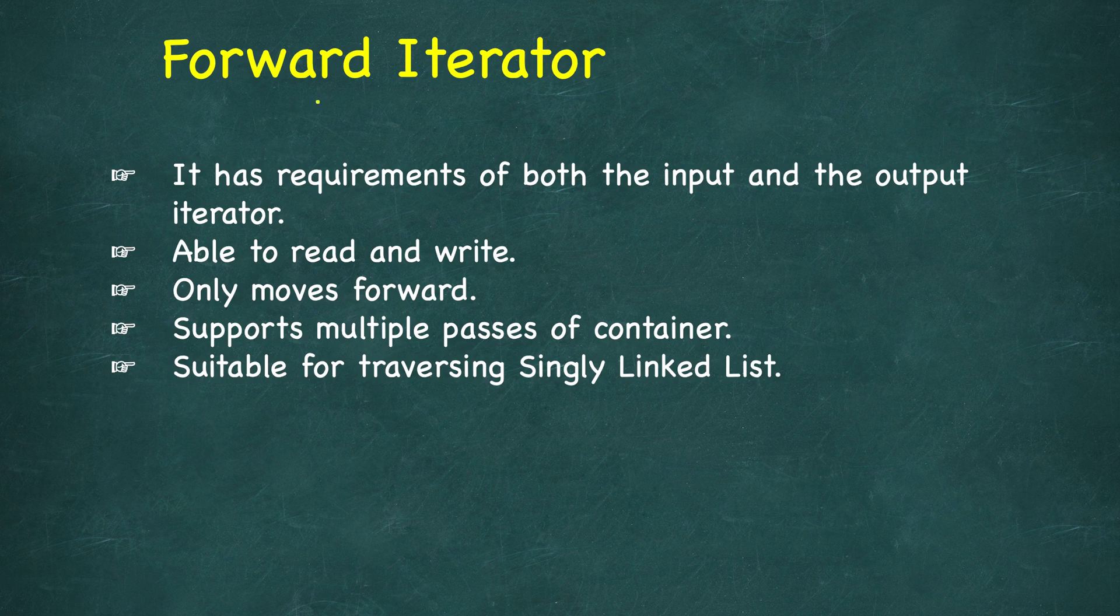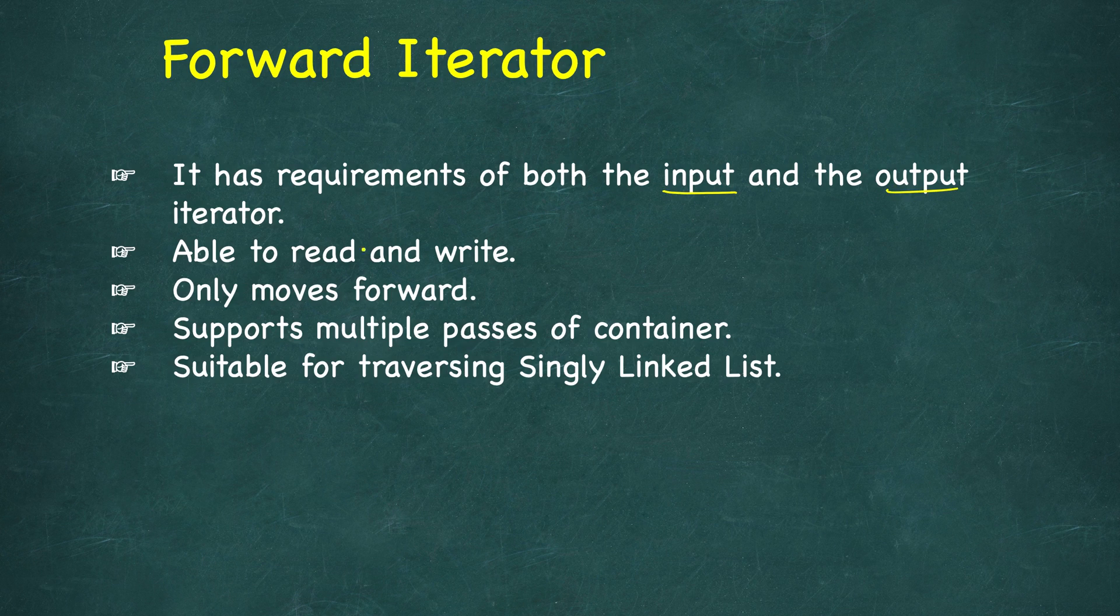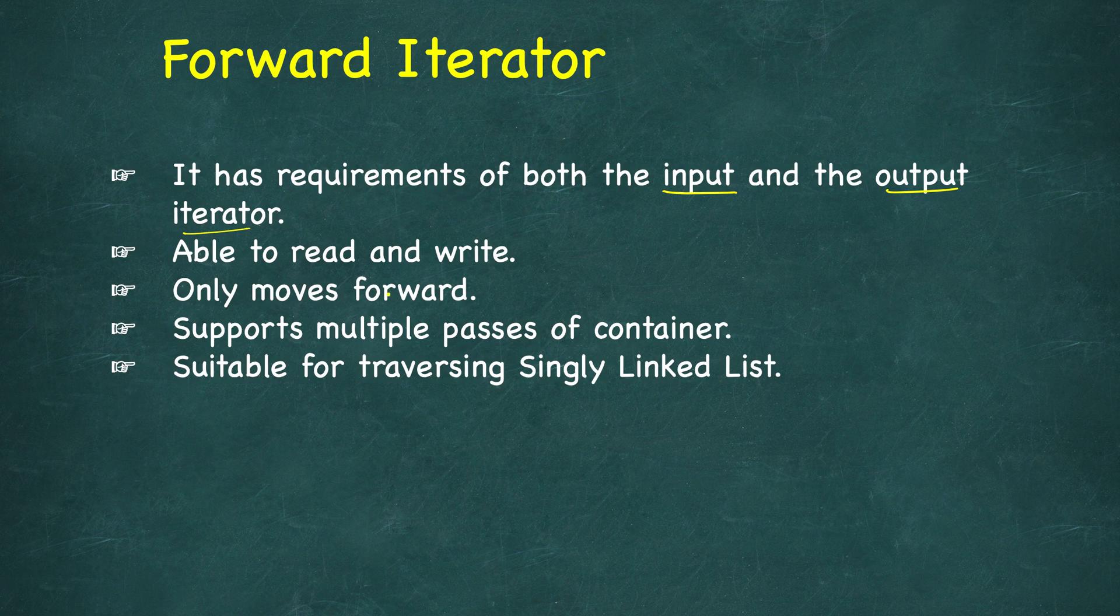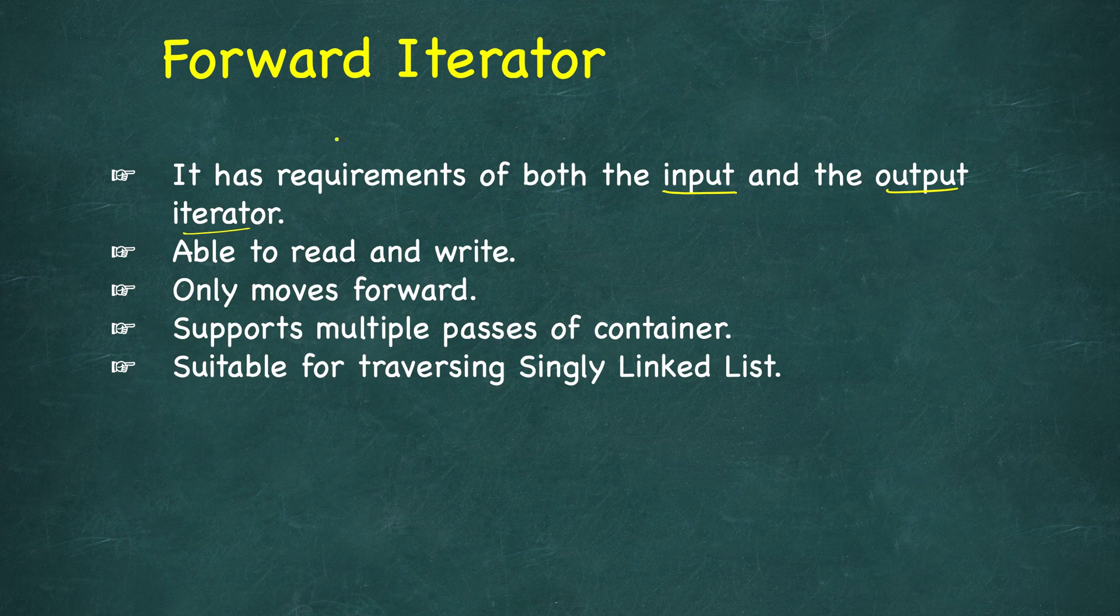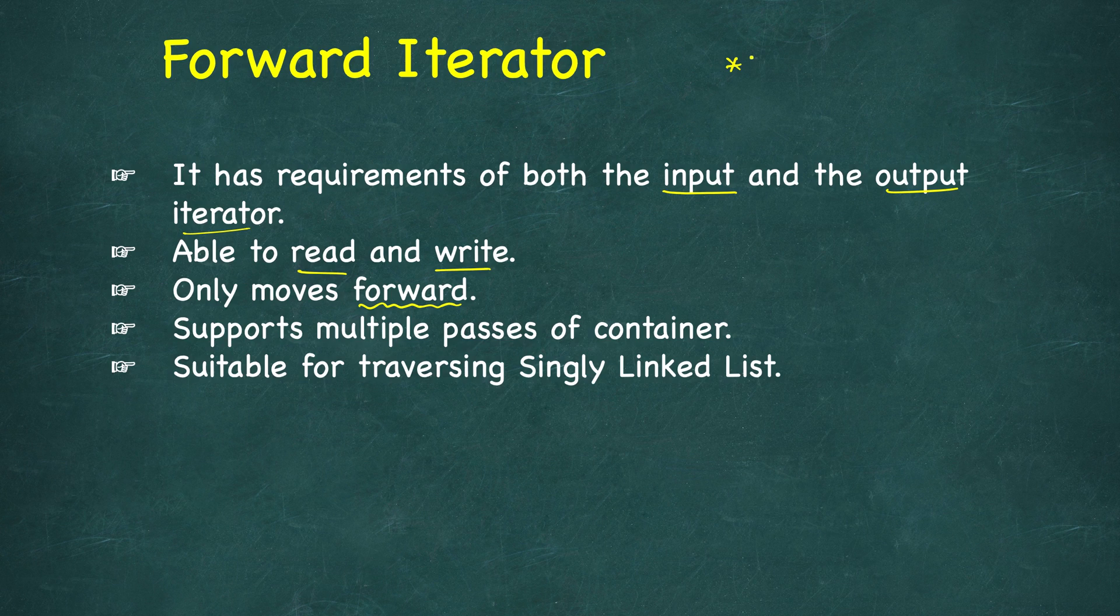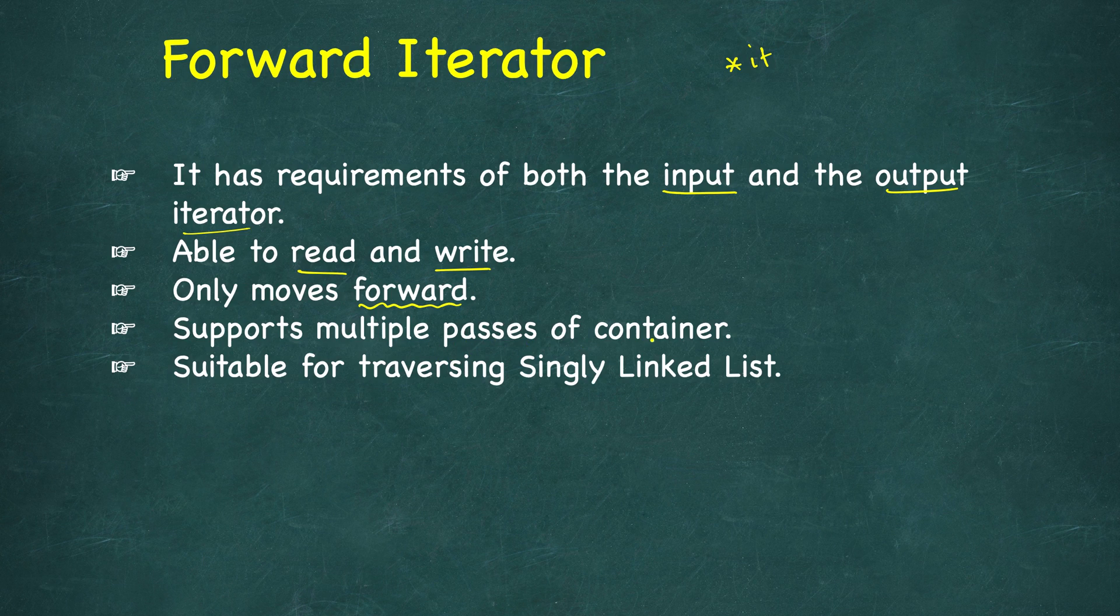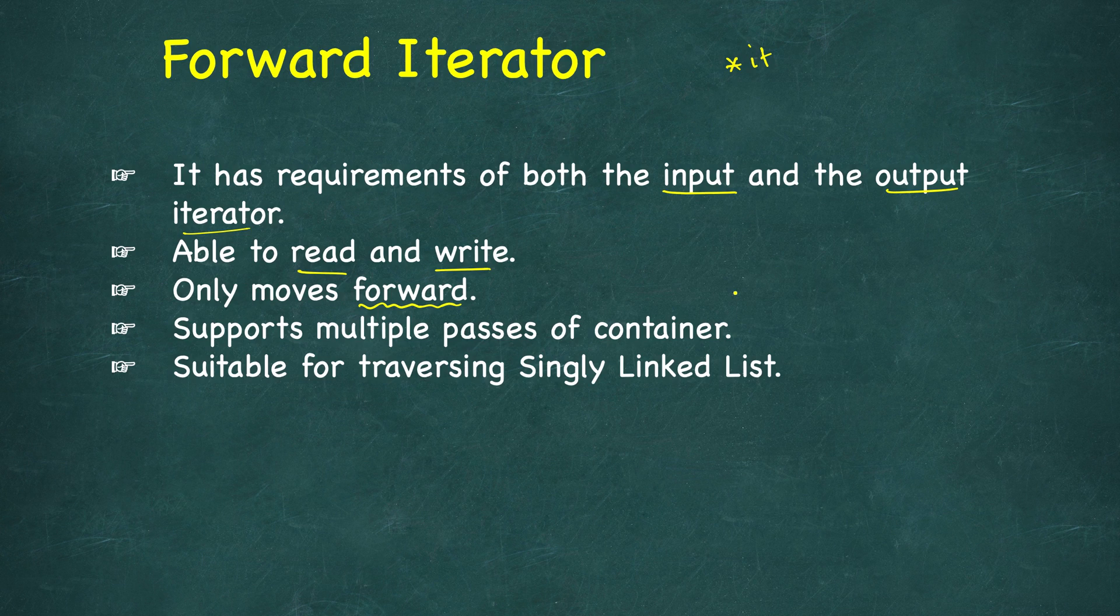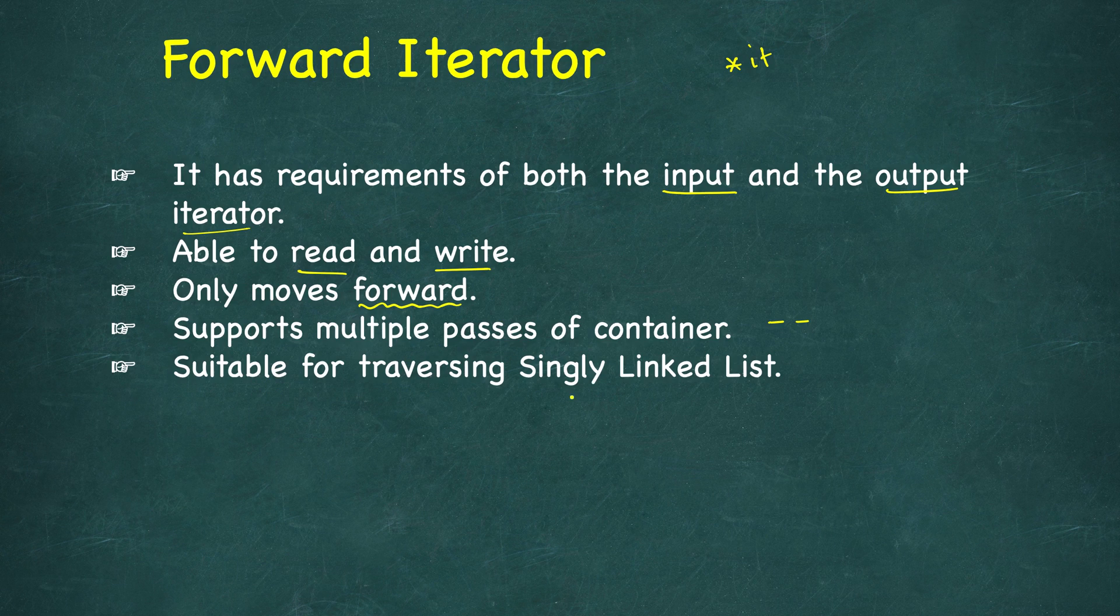The third iterator is forward iterator, which has the requirements of both input and output iterators. Both input and output were moving in forward direction only, and forward iterator also moves forward. It's able to read and write both - you can dereference it and either read or write, both are allowed. It supports multiple passes of containers. But it does not mean you can do minus minus - this is not allowed. It's suitable for traversing singly linked lists, since in singly linked lists you only need to move forward, not backward.